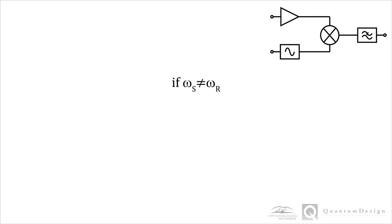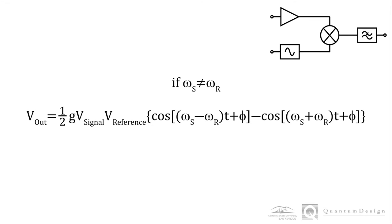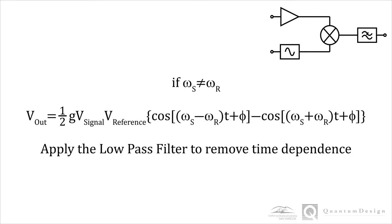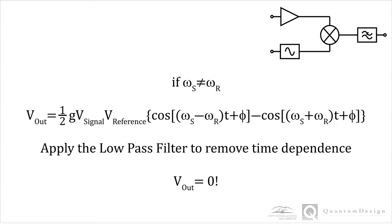The advantage of this technique is made clear when the signal frequency is not the same as the reference frequency. We take the mixer output as before, and now both cosine terms vary in time. The first term has a frequency corresponding to the difference in frequencies between the signal and the reference, and the second term has a frequency corresponding to the sum frequencies of the signal and the reference. By applying the low-pass filter, ideally, there is no output. We will soon demonstrate this using the Electronic Transport Option, or ETO, module of the VersaLab.